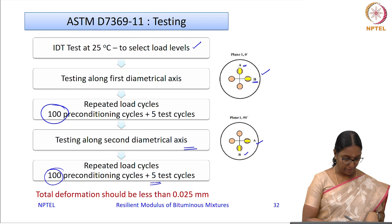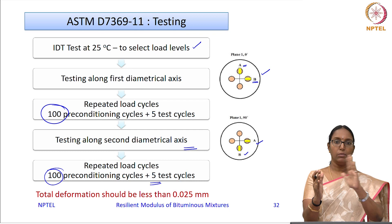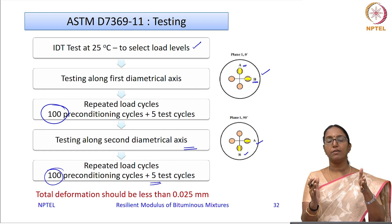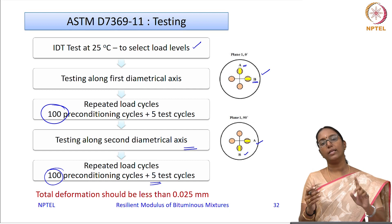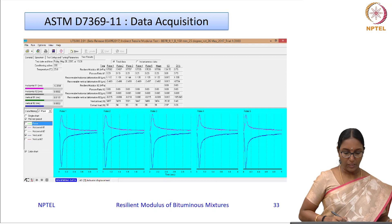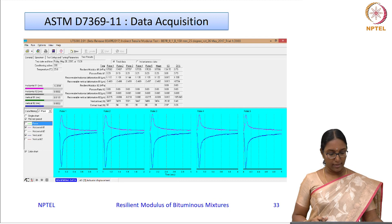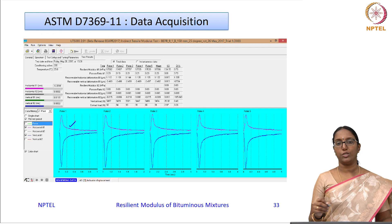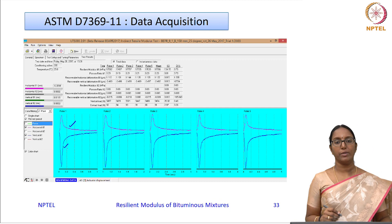Data is collected from plane 1 (the right side plane) and similarly from plane 2 (the left plane), each providing 5 cycles of data at the 0-degree arrangement and another 5 cycles at the 90-degree arrangement. A typical data screenshot shows the pink line representing horizontal deformations from the horizontal LVDT and the blue line representing vertical deformations from the vertical LVDT.